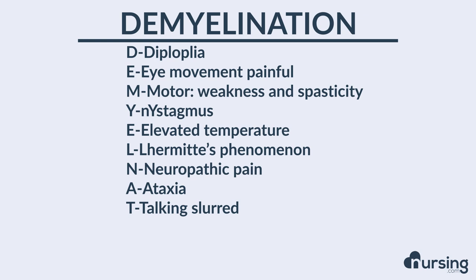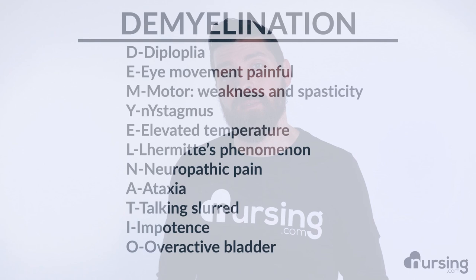I stands for impotence. In male patients, be suspicious of a nerve conduction issue if they're reporting problems with impotence. O stands for overactive bladder. There's a lot of nerve conduction disruption happening because the insulation around the nerves is being attacked and destroyed. Anytime a patient reports feeling like they have to go to the bathroom all the time, that may indicate multiple sclerosis.